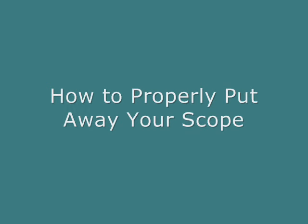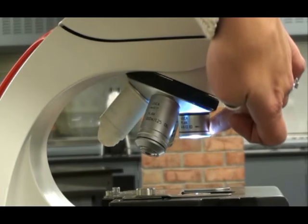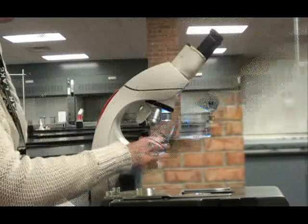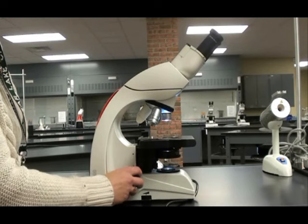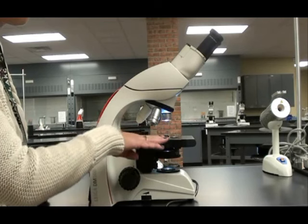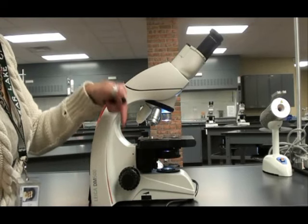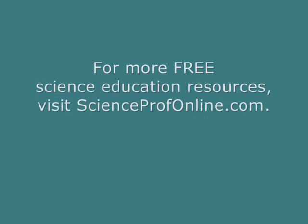When you are all done, it's important to put away your scope properly so that it won't get damaged. You do this by making sure that the shortest objective lens is pointing down, the scanning power. Then you dial the coarse focus down all the way to lower the stage as far as it can go. This way, we know that the lens is not going to smash into the stage. More seriously nerdy, amazing free stuff at ScienceProfOnline.com. Go there!